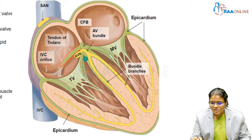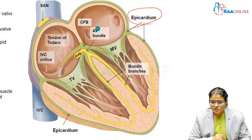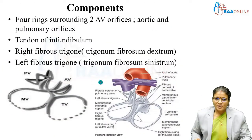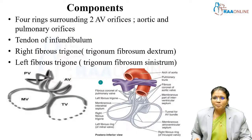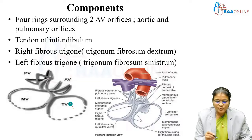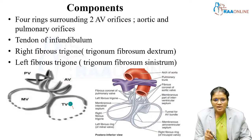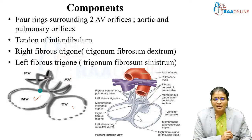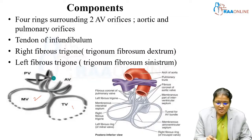Along the valves, fibrous connective tissue is present. The epicardium is also made up of fibrous connective tissue of collagen, and the tendon of Todaro is made up of fibrous connective tissue of collagen. The components of the fibrous skeleton include four rings surrounding two atrioventricular orifices and the aortic and pulmonary orifices — one ring encircles the right atrioventricular orifice, a second encircles the left atrioventricular orifice, a third is the aortic ring, and a fourth is the pulmonary ring.